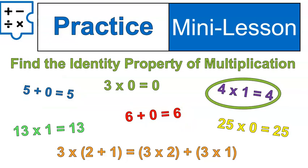Find the identity property of multiplication. Here's one example: four times one equals four. Notice we started with four and we ended with four — that's the identity property of multiplication. There's one other example out there. It was 13 times one equals 13. The number you start with is 13, we multiply times one, and we're left with 13.